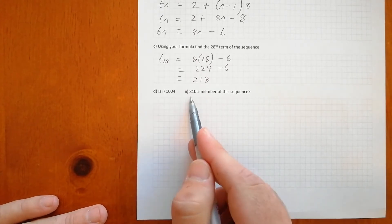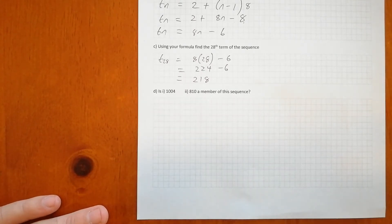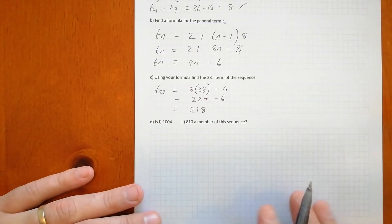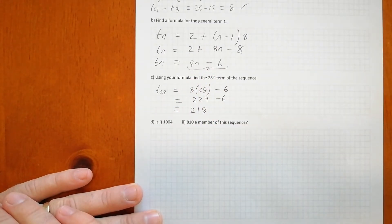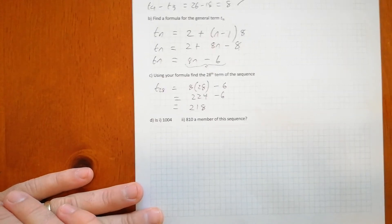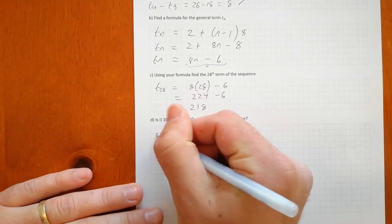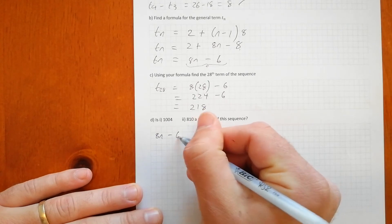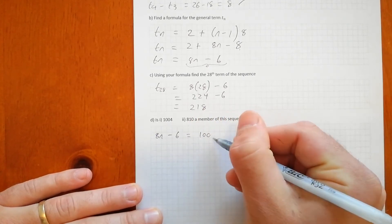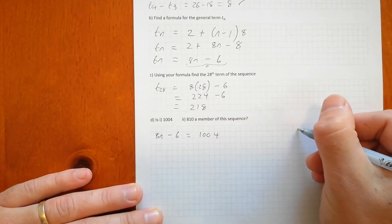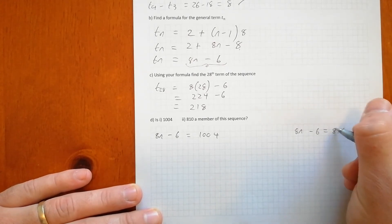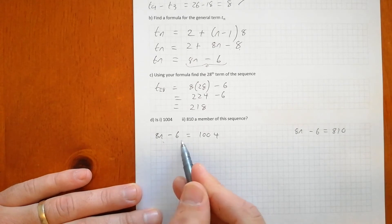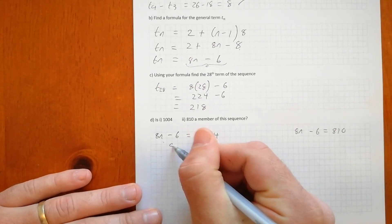So the way we're going to check is we're going to say, well, here's the rule for the sequence. This dictates all the numbers that belong to the sequence. So we're going to say, well, does the rule satisfy any of these numbers? So we're going to check both. And I'll do it over here. So let's check the first one here, 8n take 6 equals 1,004.